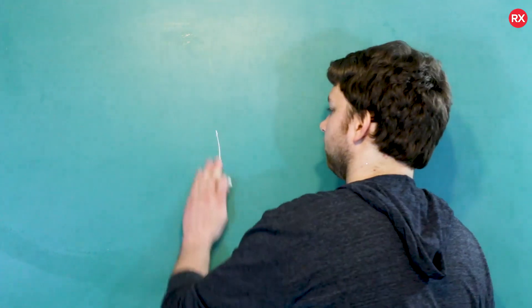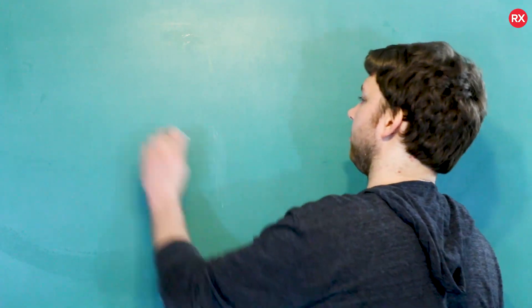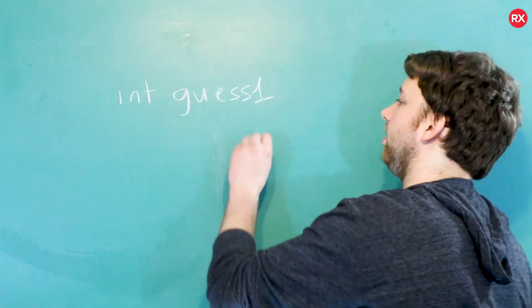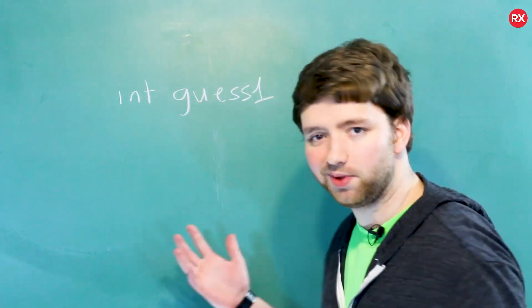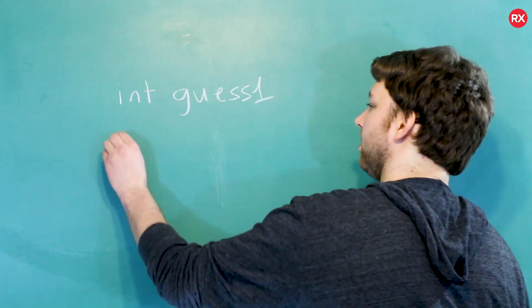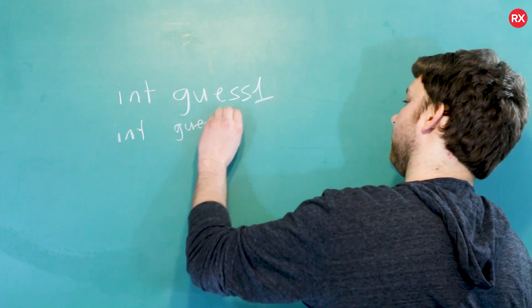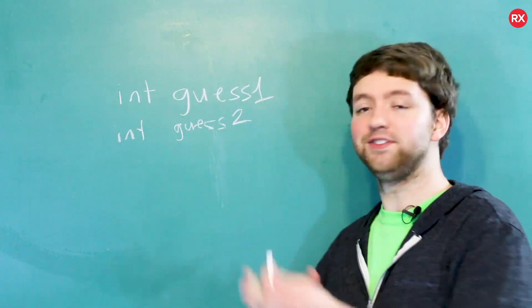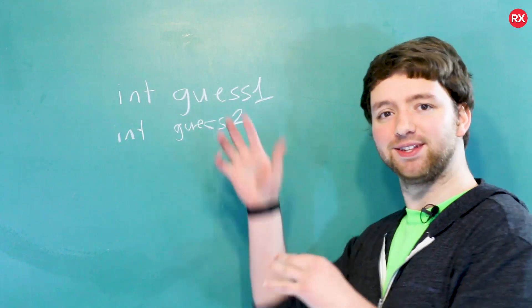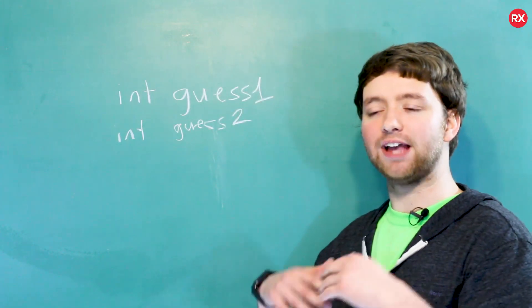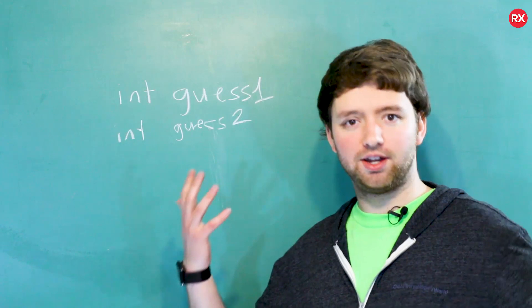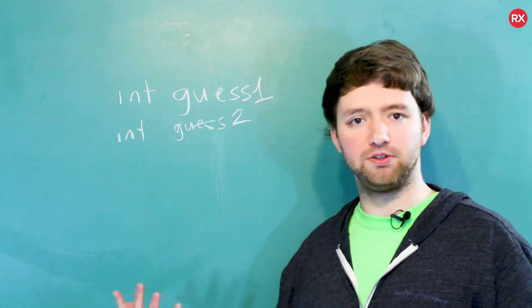Alright, so where do we even begin? Well, let's say we wanted to keep track of someone's guesses. You might have something like this: int guess1, and then assuming they don't get it right the first time, you might have another variable, guess2, and you just keep doing that. Basically have as many guess variables as there are possible options. Obviously you can tell that's pretty stupid. The solution is not scalable.